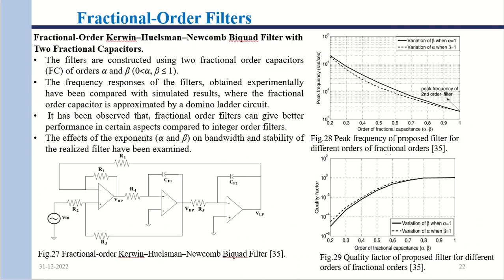Moving on to a fractional order Kerwin-Huelsman-Newcomb (KHN) biquad filter with true fractional capacitors. Two fractional capacitors of orders α and β are used. The peak frequency response for different orders is shown in figure 28, and the quality factor versus filter order is shown in figure 29.